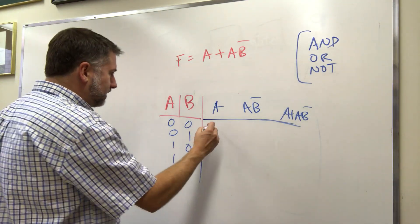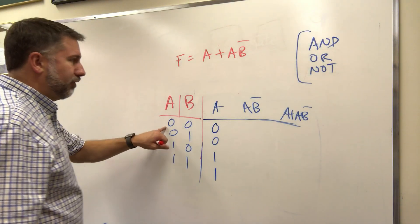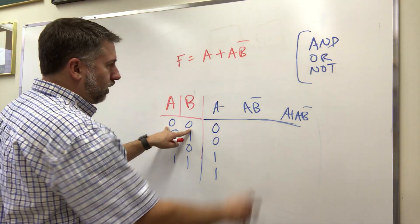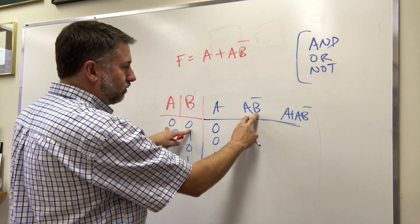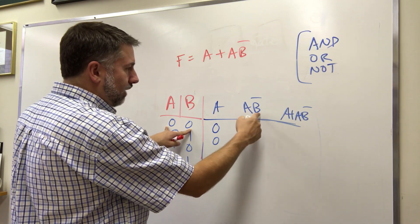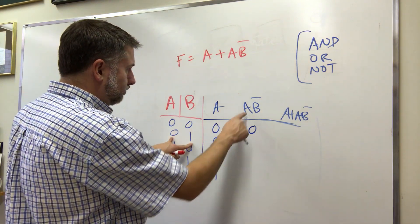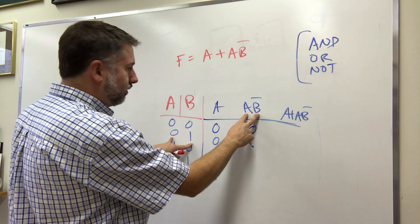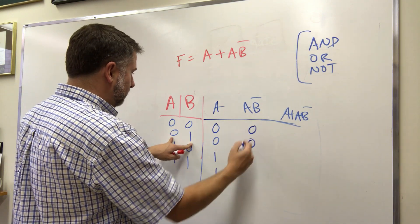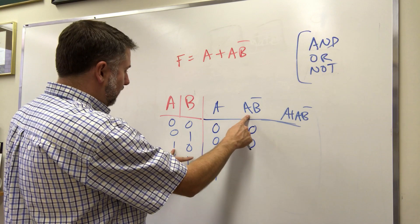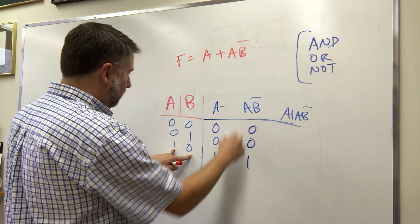Well A is easy, zero zero one one. A B prime, well if A is zero and B is one A B is zero then A B is zero one which is a zero because zero and one is going to give us zero. If A is zero and B is one then this is a zero, B becomes a zero, that's a zero.